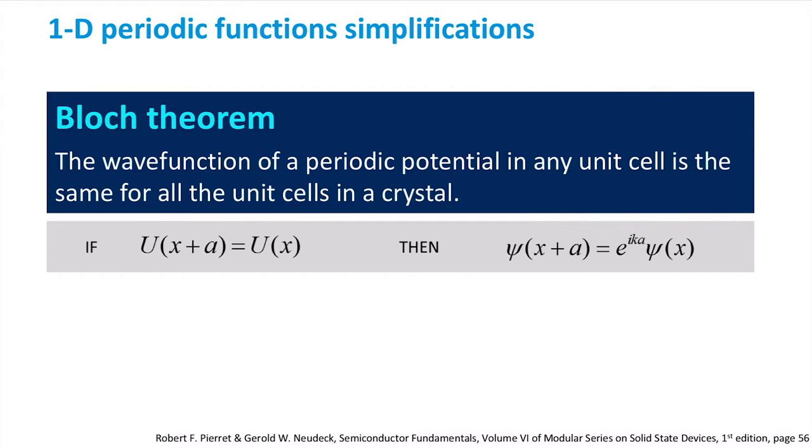When dealing with a periodic function, we can apply an additional approximation, the Bloch theorem. As a result, we can solve the Schrödinger equation focusing only on a single unit cell. We assume that the lattice is built up of a number of unit cells and consider the other unit cells to be equivalent.